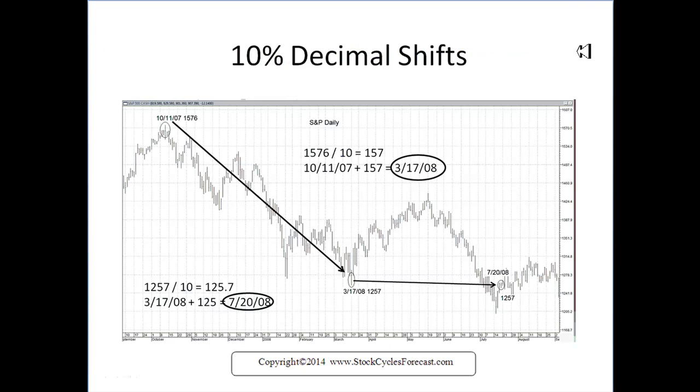This 10% decimal shift is quite frequent, and it can be in days, hours, weeks, or months. Here's an example of a daily S&P chart. From the high of 1576, if we shift the decimal point to 157.6, or 157 days later, we get the first big low. At that first big low, the price is now only $12.57. So we move the decimal point there, 125.7, 125, 126 days later, is the next big low, 721. So, again, we see the numerology of the top is spinning out cycles, giving us our next big turns.